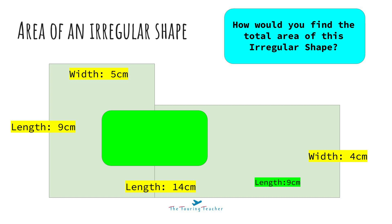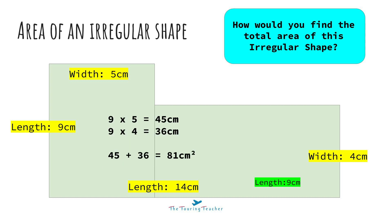Now that I've done that, I can figure out the area of the two different rectangles and put them together. The first one: nine centimetres times five centimetres equals 45 centimetres. Now I can do nine centimetres times four centimetres, which equals 36 centimetres. Now the last step — I need to add those two totals together: 45 plus 36. And altogether, the area of this whole irregular shape is 81 centimetres squared.